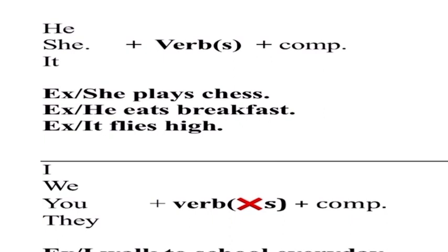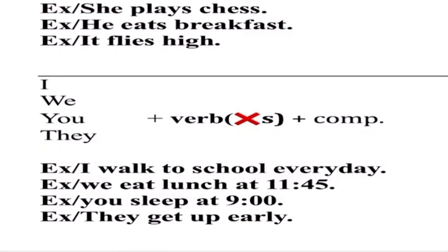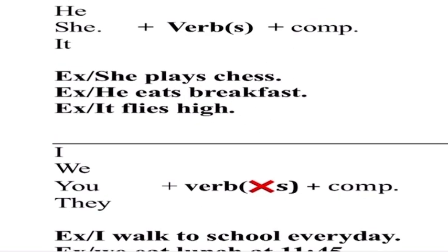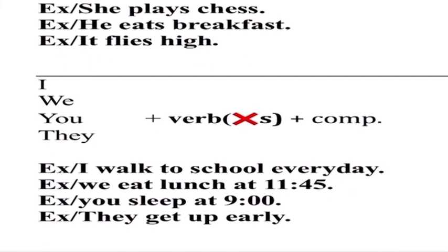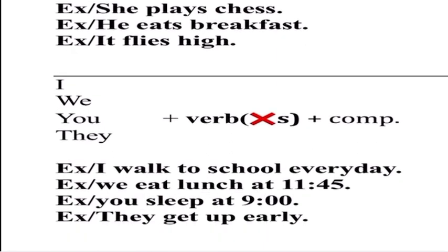We have to add 's' to the verb. For example, 'he eats breakfast every day'. With 'he' we have 'eats' — we cannot say 'he eat breakfast', we have to say 'he eats breakfast'. For I, we, you, they — we delete the 's', because it's plural, not he/she/it. I is for myself, and we/you/they is for more than one person, so we cannot add 's' to the verb.